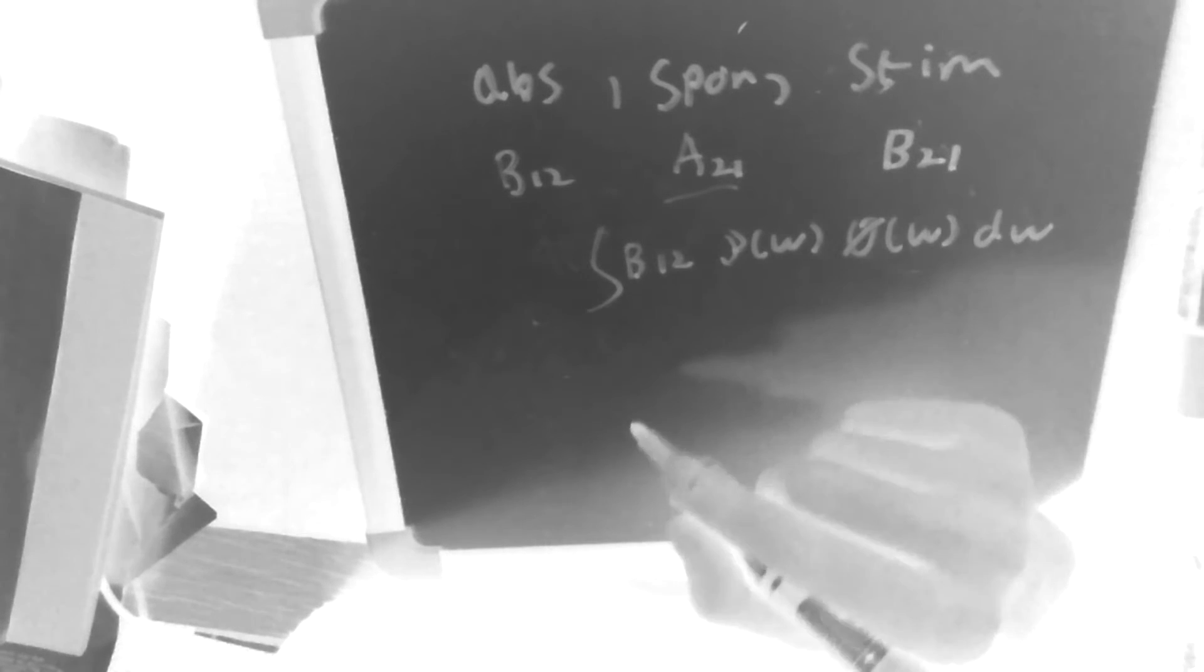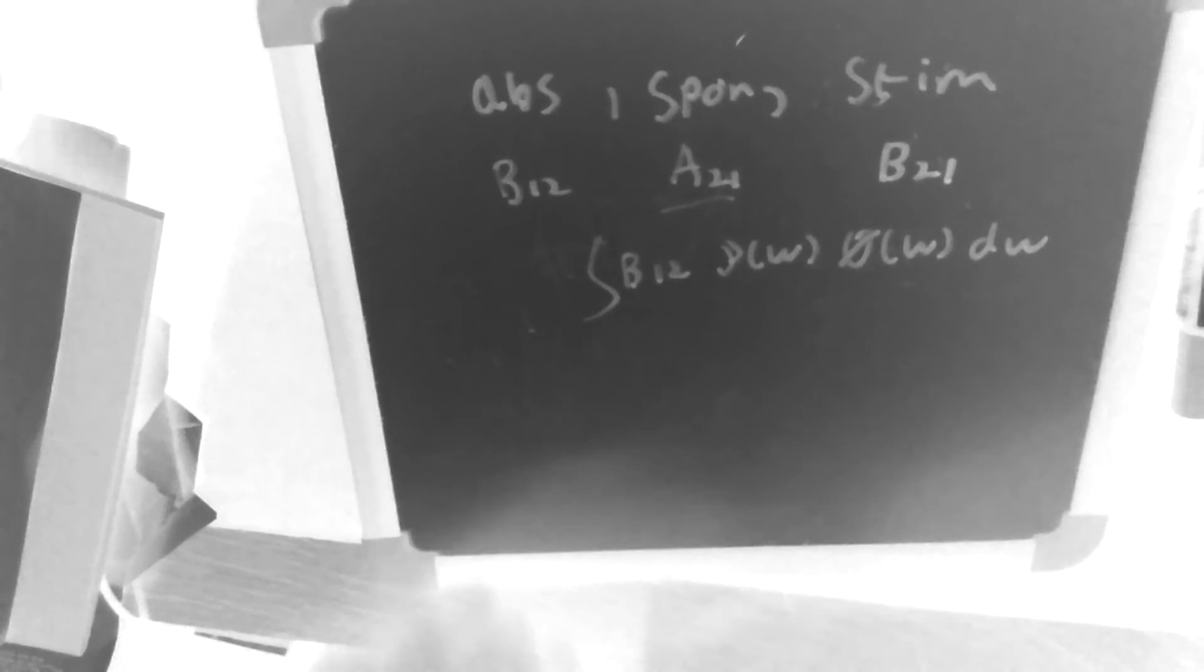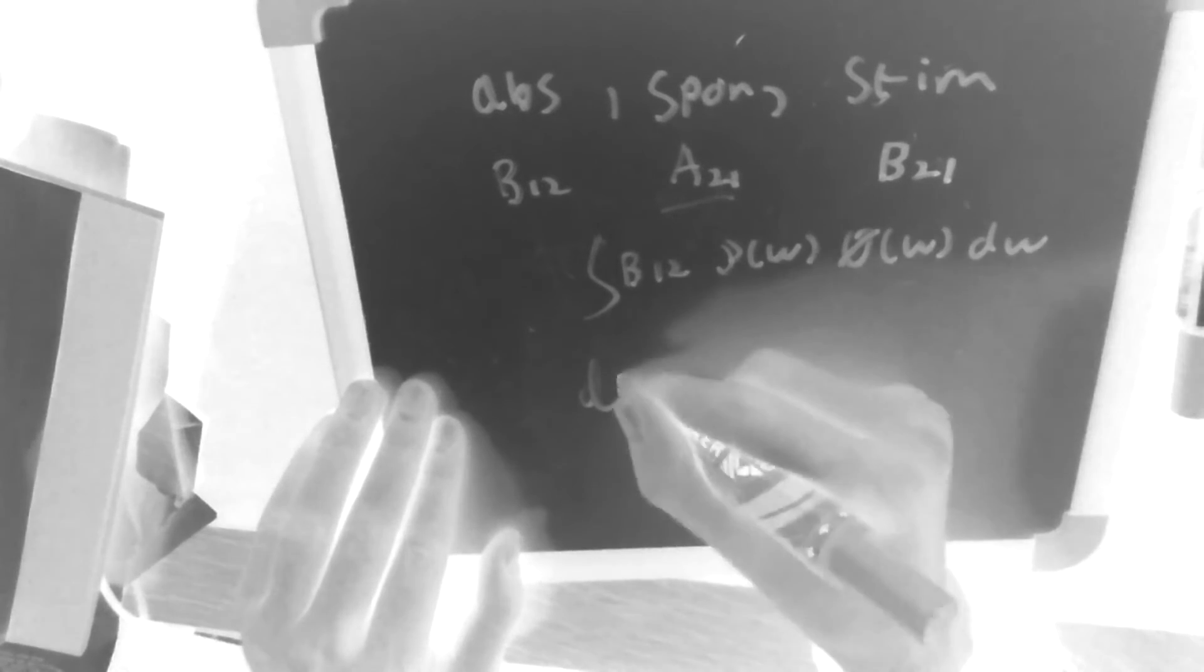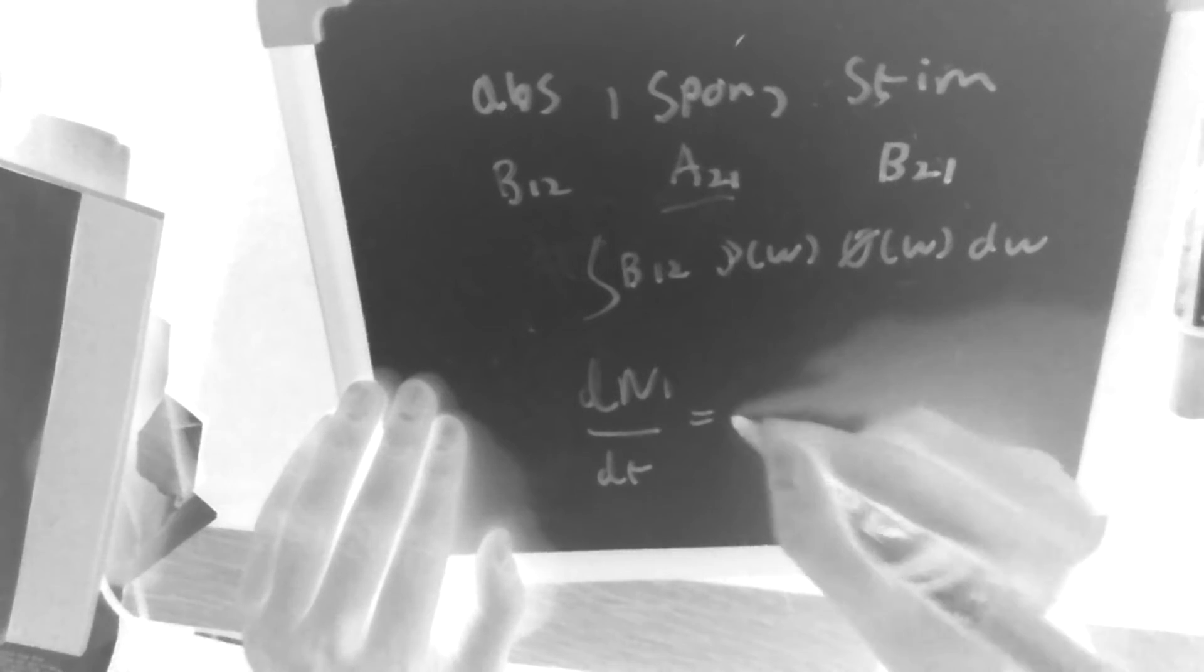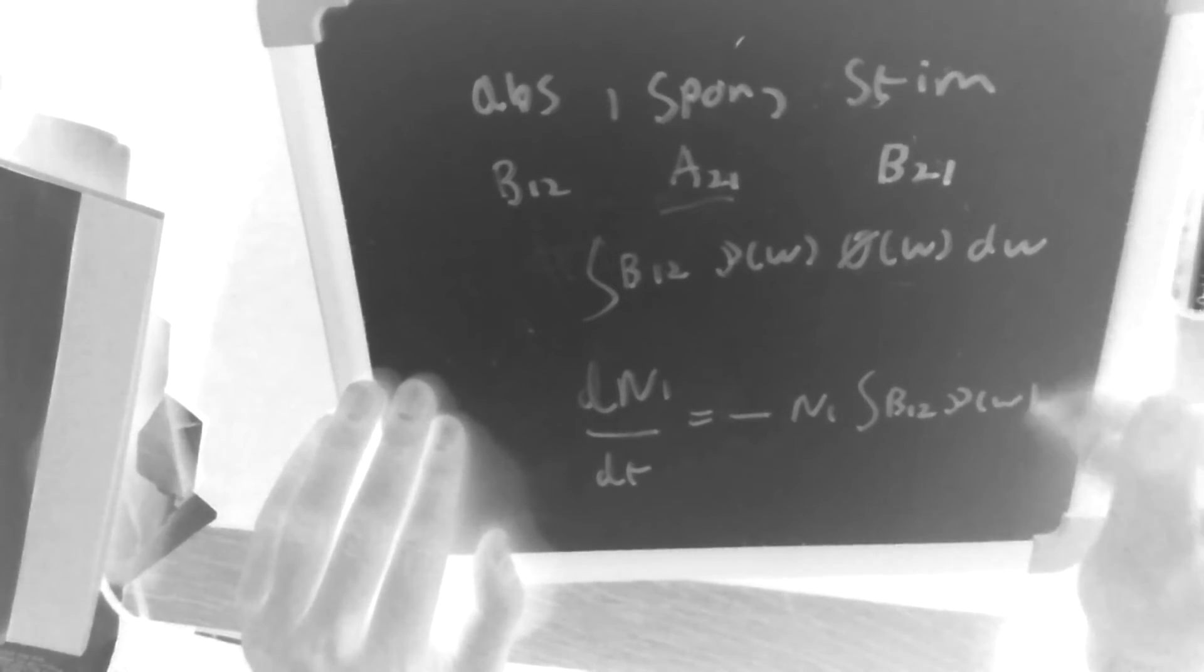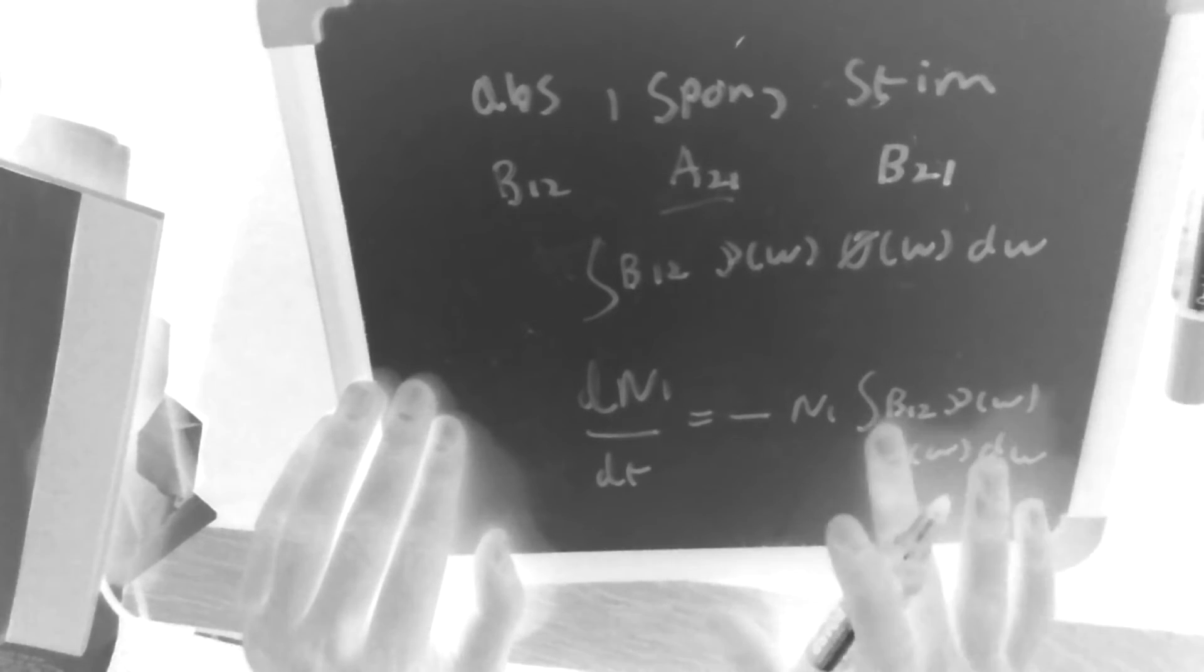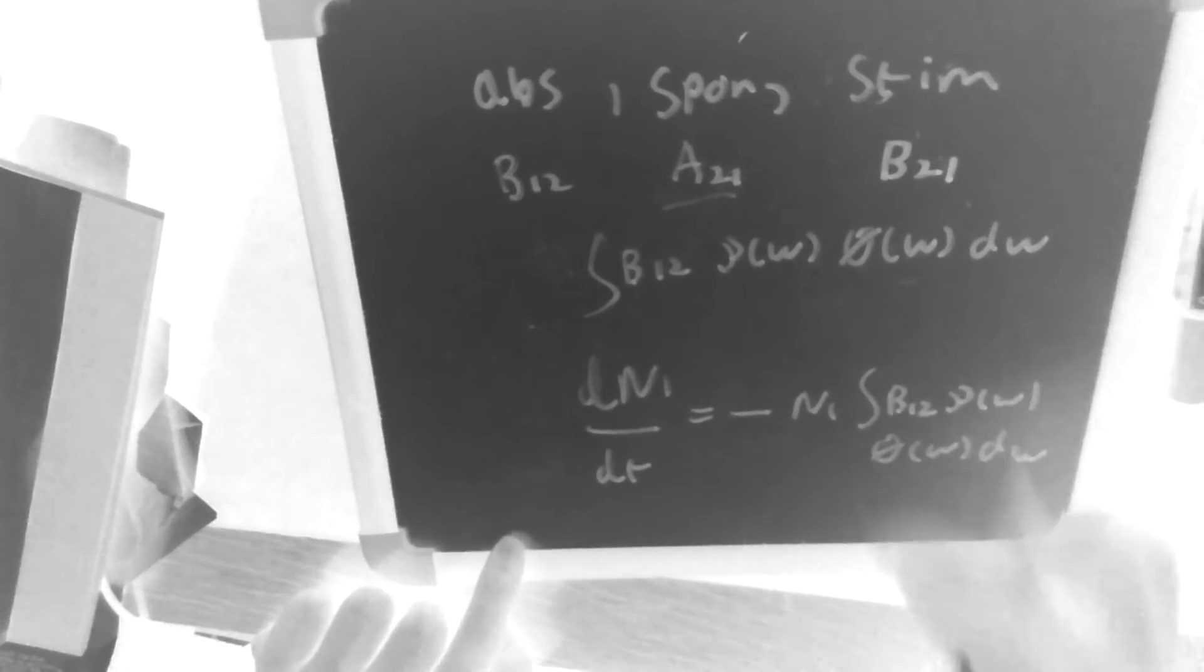Okay, and if we were to write down our equation we had last time, but this time let's write it in terms of n1, so this is the number of atoms in the lower energy state. This is simply going to be n1 times B12 times rho omega, phi omega, d omega. The Einstein coefficient doesn't depend on omega, does not depend on omega, so you can bring it outside the integral. Okay, that's the definition of B12.